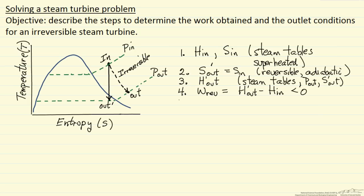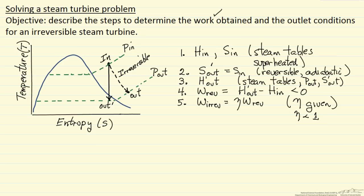We need to determine the work for the actual system, the irreversible process. The work for the actual system — let's call it irreversible — is going to be some efficiency times the reversible work. This efficiency needs to be given; it's a property of the system with a value less than one because it's irreversible. Once we're given that, we can calculate the irreversible work, which is one of our objectives.